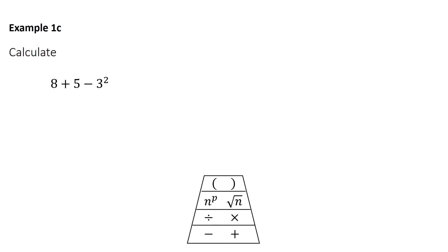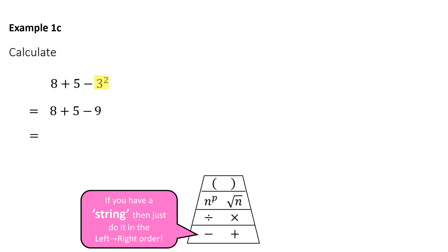In the last BIDMAS example: 8 plus 5 minus 3 squared. We do the squared part first — 3 squared is 9 — and that remains in the last position, keeping the order the same: 8 add 5 minus 9. Both the add and the minus are in that bottom section of the priority graphic, so we just complete left to right: 8 add 5 minus 9 is 4.